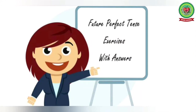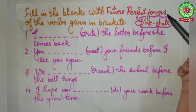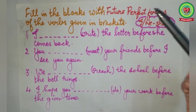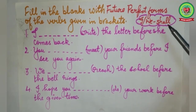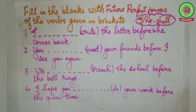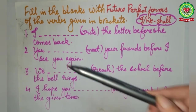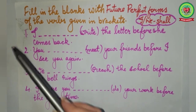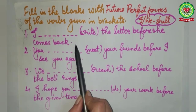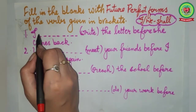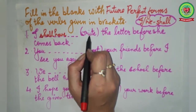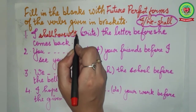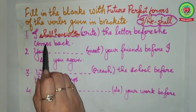Now we will do some examples — fill in the blanks with the future perfect forms of the verbs given in brackets. First, check your subject: if it is 'I' or 'we,' use 'shall have' followed by the past participle; for any other subject, use 'will have.' First sentence: 'I dash write the letter before she comes back.' Subject is 'I,' so we use 'shall have.' Past participle of 'write' is 'written.' Answer: 'I shall have written the letter before she comes back.'